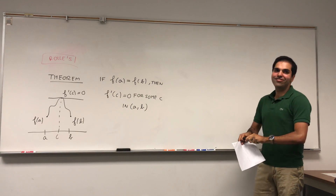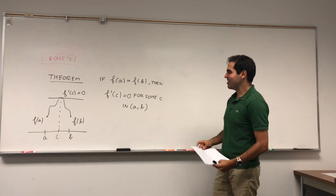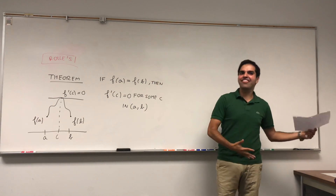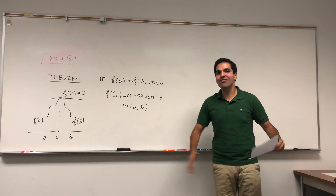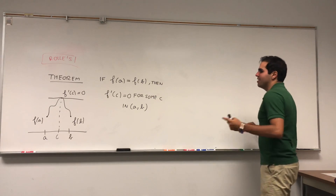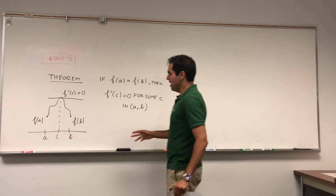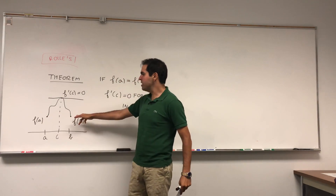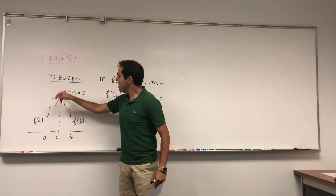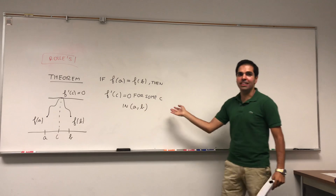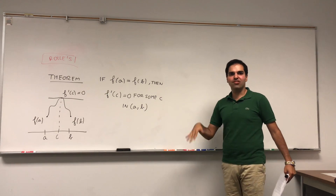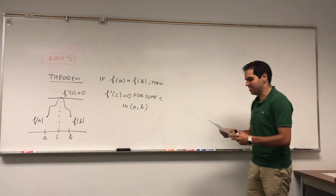And the funny thing about this — we will actually prove this theorem by reducing it to another theorem called Fermat's theorem, which we'll actually prove too. Here's the idea: if the starting point equals the ending point, unless it's a constant function, then it has to have a max or a min inside the interval, and there's a theorem that says at a max or a min, the derivative must be zero.